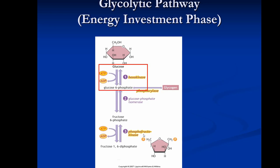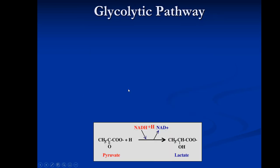After investing two ATP, we enter the energy generation phase, where ATP is made at multiple steps. Also notable here: two hydrogens are given to a molecule called NAD, forming NADH. That NADH then carries those hydrogens and donates them to pyruvate, converting it to lactate. The hydrogens are important not for direct ATP generation but for facilitating the conversion of pyruvate to lactate.